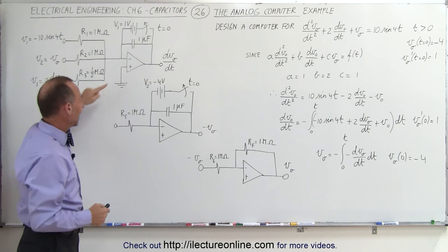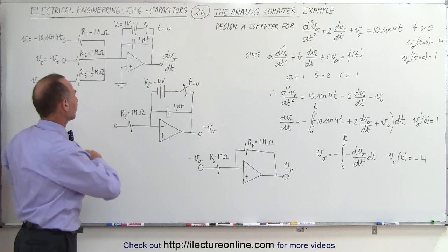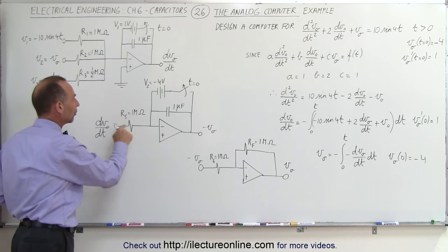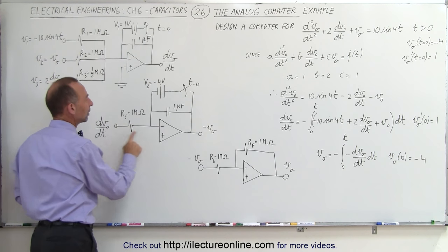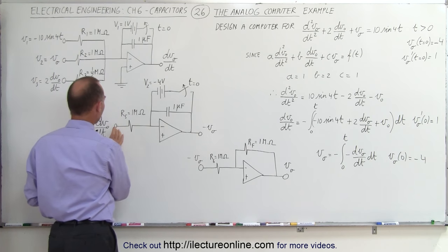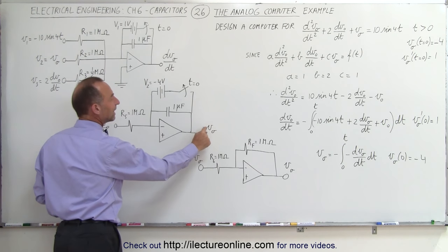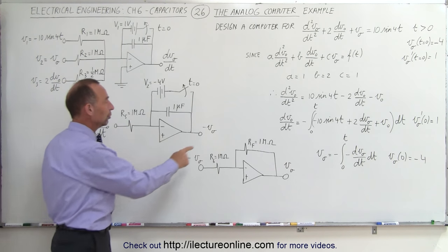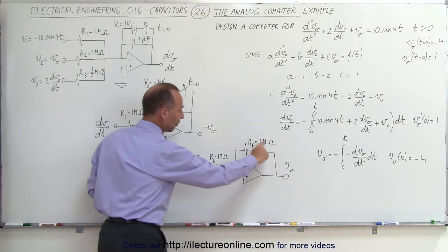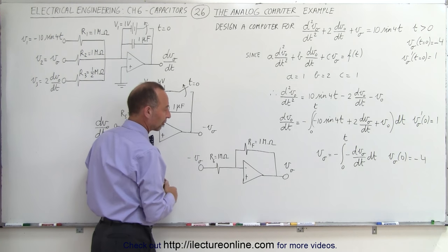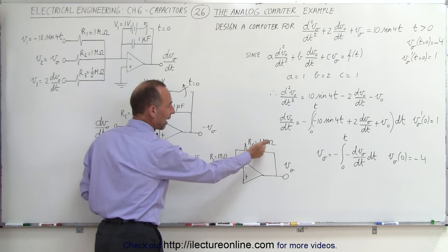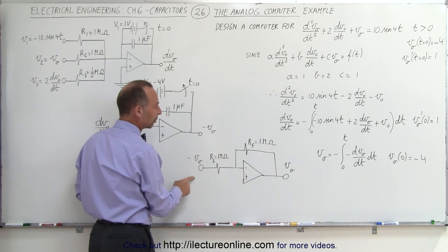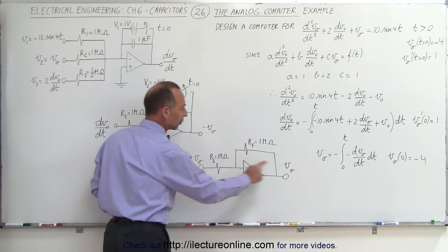We feed the dV/dt signal into a second integrator circuit. This second integrator produces negative V_o, because integration changes the sign. To convert negative V_o back to positive V_o, we use a third circuit that simply changes the sign — there's no amplification, since the feedback resistor equals the input resistor in value.